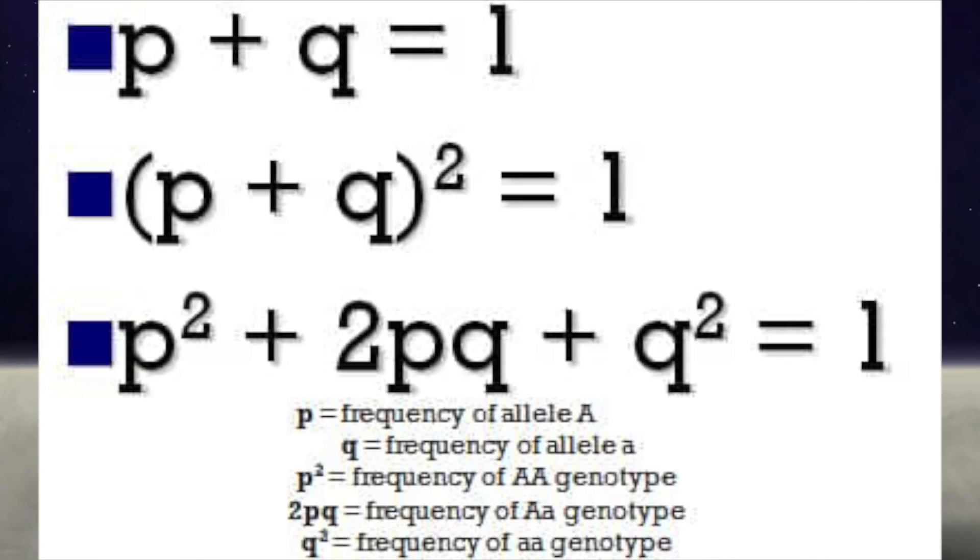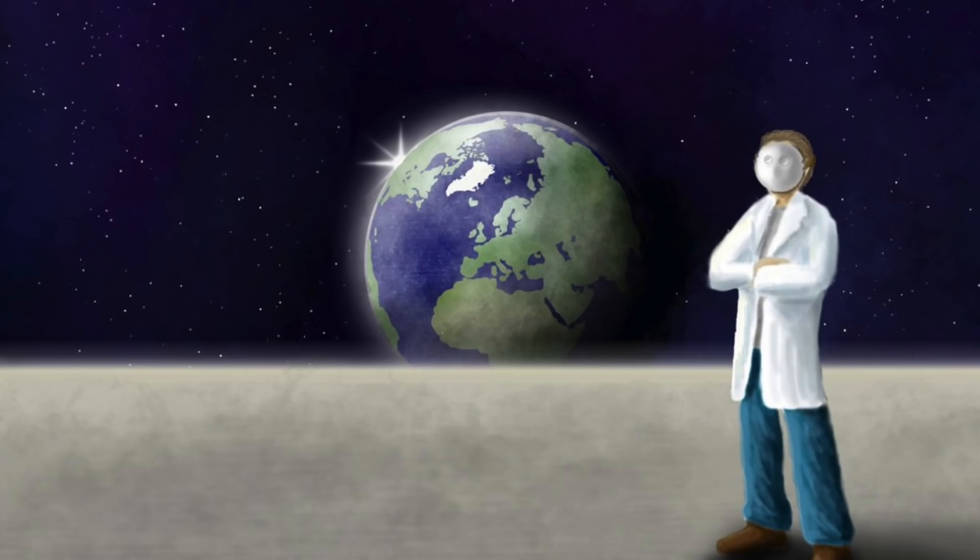Hardy-Weinberg's equation assumes a large population where mating is random. What do you see from these examples I've listed? Yes, some of them assume something specific, and if that condition is met, then the equation is always correct.